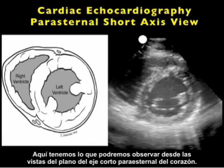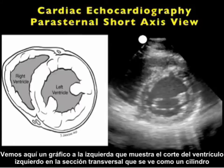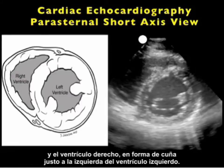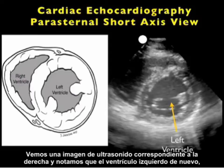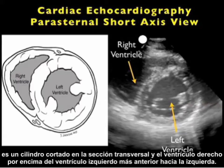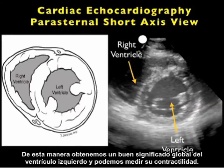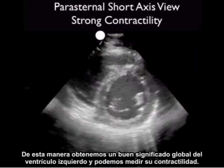Here's what the views from the parasternal short axis plane of the heart will look like. We see a pictorial showing the left ventricle cut in cross section as a cylinder, and the right ventricle is a little sliver just to the left of the left ventricle. We see an ultrasound image corresponding to the right, and note the left ventricle again — that cylinder cut in cross section — and the right ventricle above the left ventricle, more anteriorly and to the left. In this way, we get a good sense of the overall cylinder of the left ventricle and can gauge its contractility.